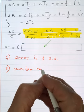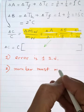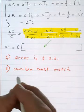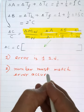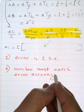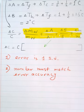Second rule: number must match error accuracy. They must match the error of accuracy.